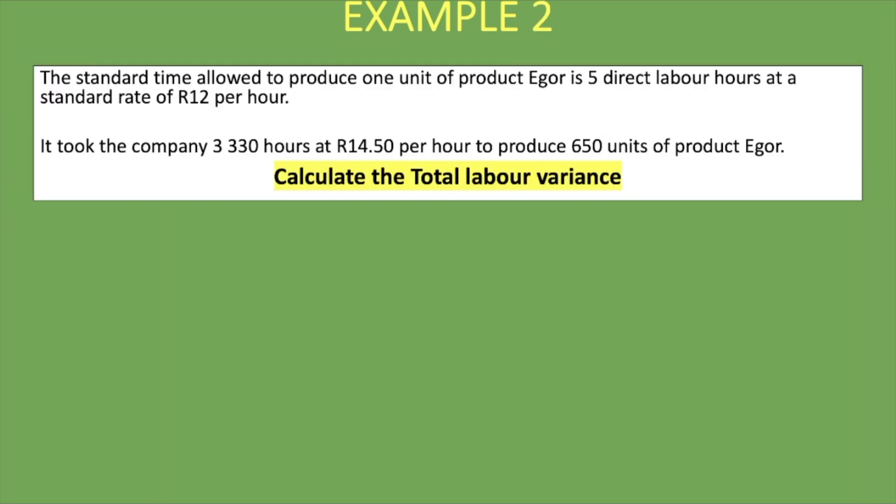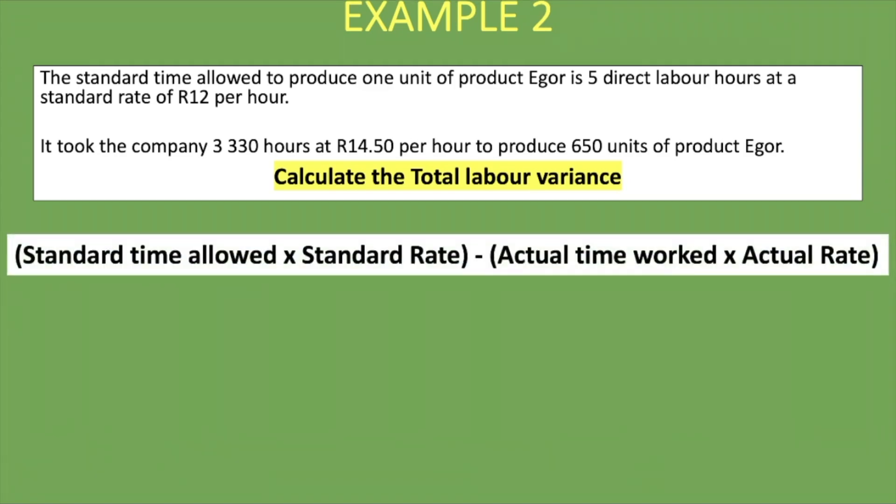For the second example, pause the video and attempt the question on your own. Try to explain whether the result is favorable or unfavorable. The standard time allowed to produce one unit of product Ego is 5 direct labor hours at a standard rate of 12 rand per hour. It took the company 3,330 hours at 14 rand 50 per hour to produce 650 units.